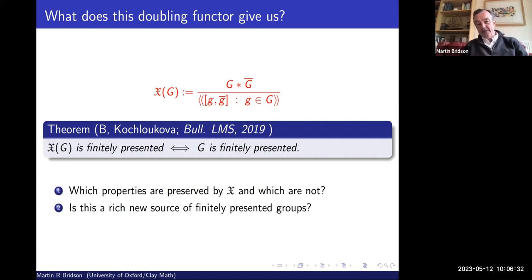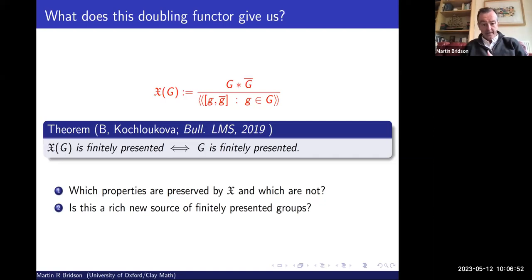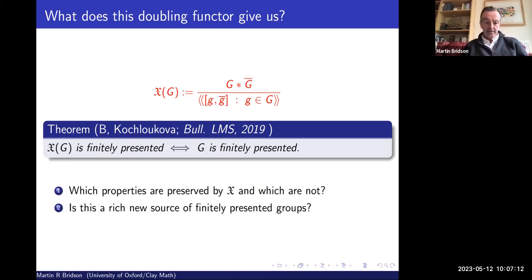Sitting back and thinking about this, it's rather exciting: here's a new way of constructing finitely presented groups — new toys. Do they just give us familiar things, or might this be a way of finding interesting new examples and counterexamples? I want to try and convince you that this really is a rich new source of finitely presented groups — surprisingly, the definition is beautifully simple but the groups you get are surprisingly complicated.